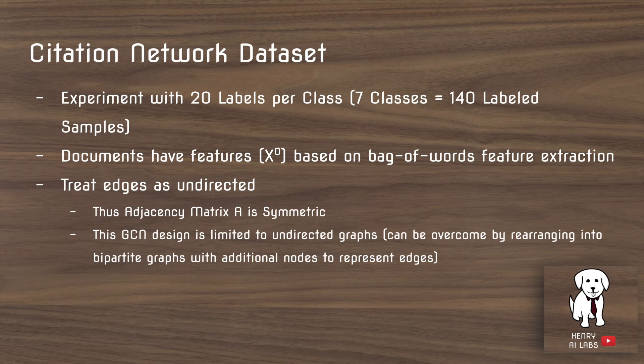So another thing about GCNs is that they treat edges as undirected. And this is due to a limitation that the adjacency matrix has to be symmetric. But you can overcome this by rearranging the directed graphs into bipartite graphs with additional nodes to represent edges.